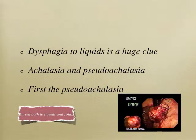The next condition is achalasia, where the lower esophageal sphincter fails to relax. If you get a patient with dysphagia to both liquids and solids stated in the opening, they are moving toward achalasia. If you see dysphagia to liquids in your exam, they are telling you this is a dysmotility disorder, and the most common dysmotility you will see in your exam is achalasia. In clinical practice, patients usually present with dysphagia to solids primarily.